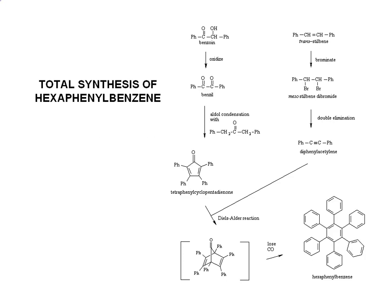Hi everyone, today we're going to talk about multi-step synthesis, which is the backbone of the pharmaceutical industry — it's used to make many important medicines we need every day. You're going to actually be making hexaphenyl benzene, which is an organic material. Looking at hexaphenyl benzene, you've got a benzene ring surrounded by six other benzene rings; every single proton on that central ring has been substituted with another benzene ring.